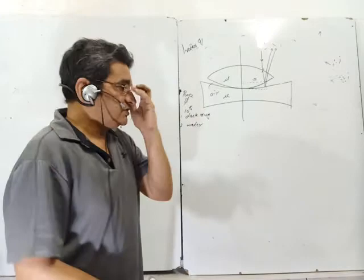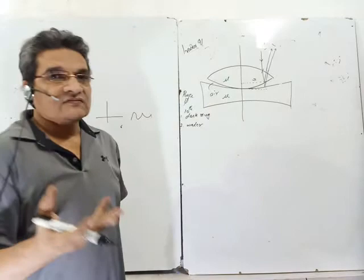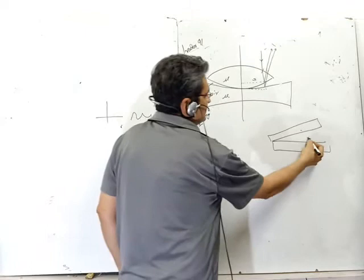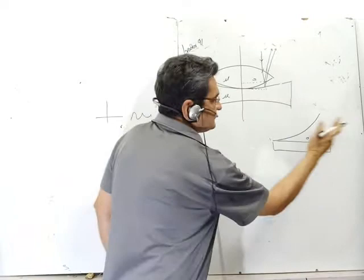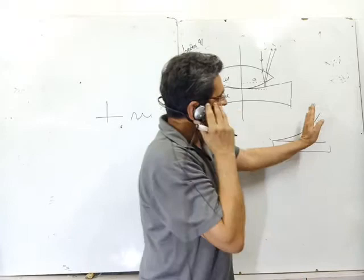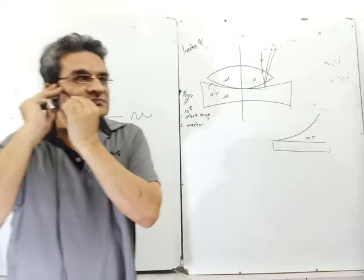I'll cover problem 91 of Irodov, which is based on Newton's rings. Don't look at Newton's rings and think it may be out of syllabus — Newton's ring is a special case of thin film interference. Normally you have glass slabs with air in between. Instead of a flat slab, you can have a curved surface like a lens, giving circular fringes, or a cylinder, giving parallel fringes. The concepts and principles are similar in both situations.